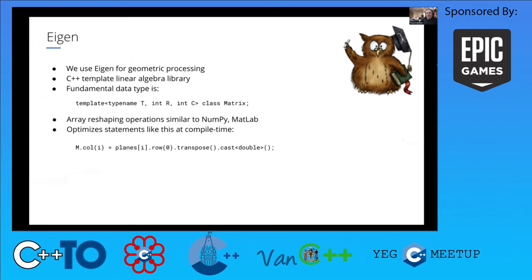The main thrust of the library is to optimize statements at compile time. So statements composing a number of operations — like multiplying, or pulling out a row from a matrix and transposing it and casting it — the template metaprogramming in Eigen will optimize those operations and elide what a naive implementation might make copies for in each component of that expression. In the best case, those copies can be elided and the computation in the assignment can be fused.